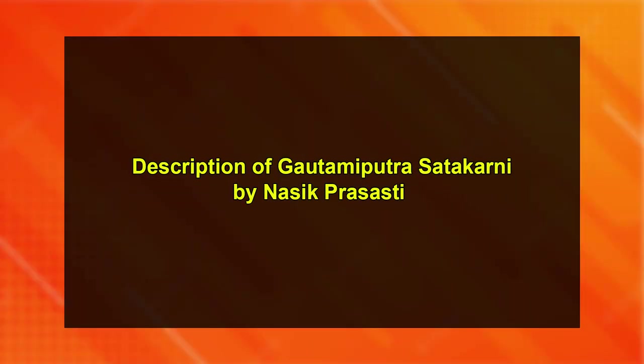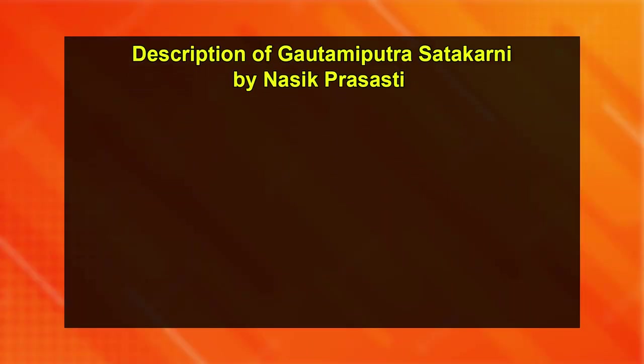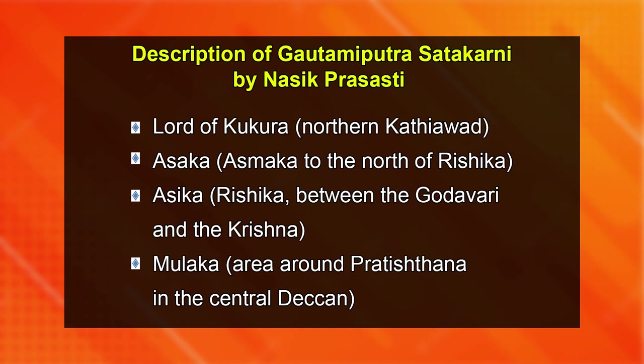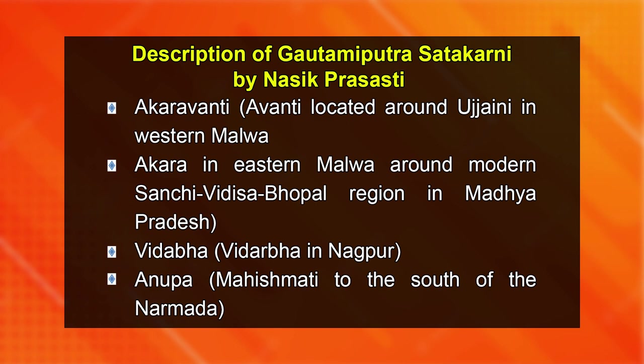Gautamiputra Satakarni has been described by the Nasik Prasasti as lord of the following regions: Kuruka — northern Kathiawar in Gujarat; Asaka or Asmaka to the north of Rishika; Asika and Rishika, between the Godavari and the Krishna; Mulyaka, the area around Pratishthana in the central Deccan; Akaravanti — that is, Avanti, located around Ujjaini in western Malwa; Akara in eastern Malwa around modern Sanchi, Vidisha, Bhopal region in Madhya Pradesh; Vidarbha in Nagpur; and Anupa, Mahishmati, to the south of Narmada.